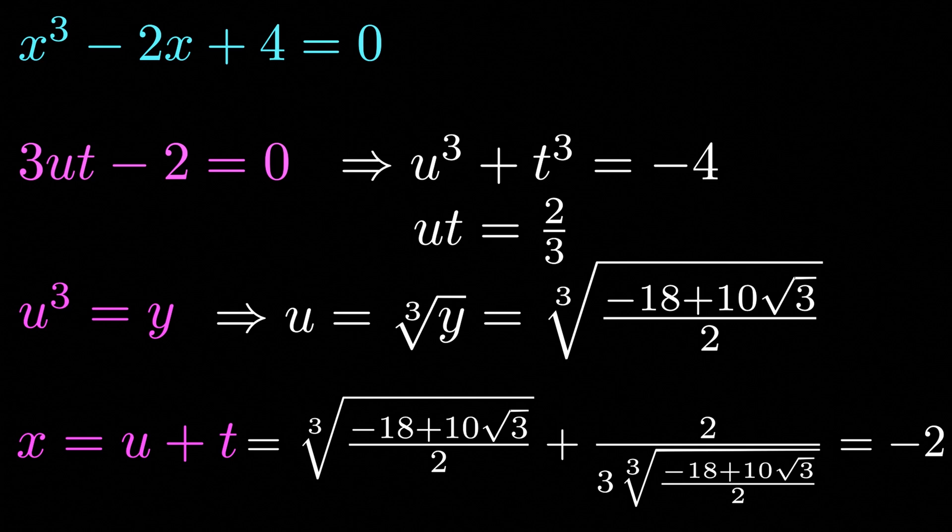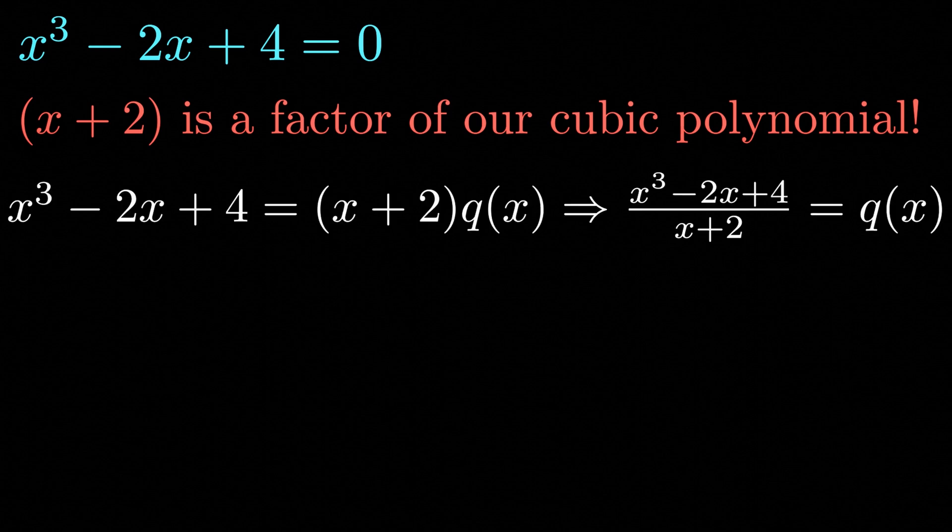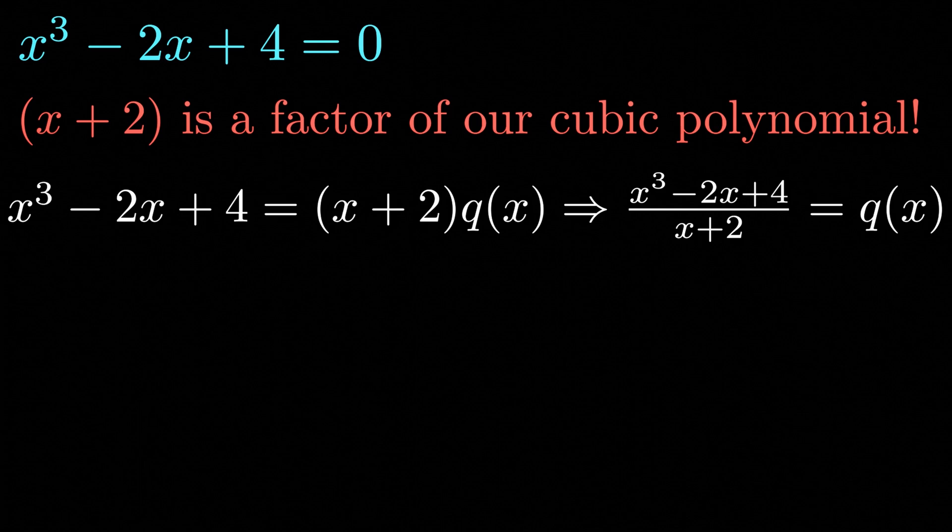Well, because we have x equals minus 2, this tells us that x plus 2 is a factor of our cubic polynomial. And this is important because it tells us that we can write out our cubic polynomial as (x plus 2) multiplied by q(x), where q(x) is a quadratic polynomial yet to be determined. If we divide both sides by x plus 2, we get x cubed minus 2x plus 4 divided by x plus 2 equals q(x). Now we can solve this equation using synthetic division. I'll show what the steps are on the screen but I won't talk you through them.